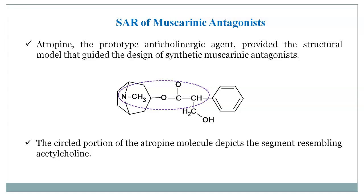The circled portion of the atropine molecule depicts the segment resembling acetylcholine. Although the amine functional group is separated from the ester oxygen by more than two carbons, the conformation assumed by the tropine ring orients these two atoms such that the interatomic distance is similar to that of acetylcholine, producing the antagonistic action.